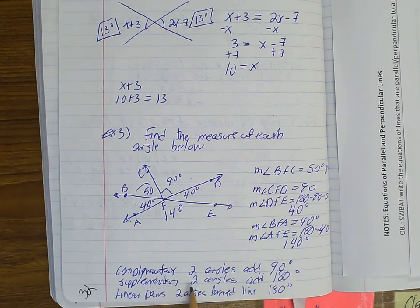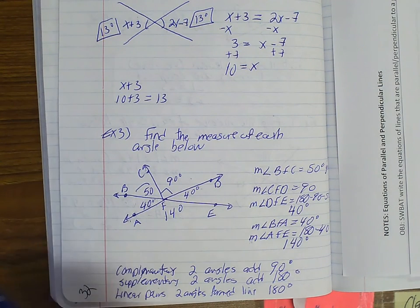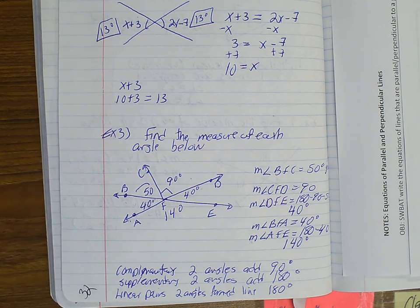And then the last thing I was talking about: complementary angles add up to 90, supplementary angles add up to 180, and linear pairs form 180. Again, sorry about the original video. I have no clue why there was no sound.